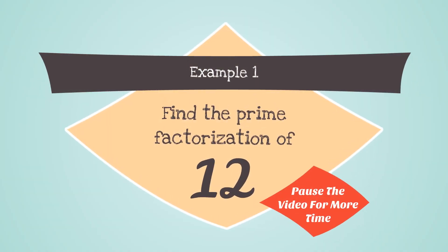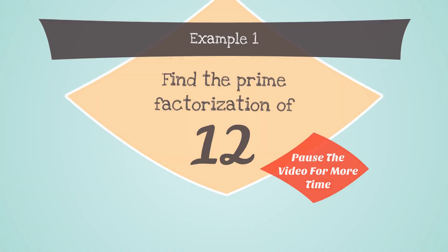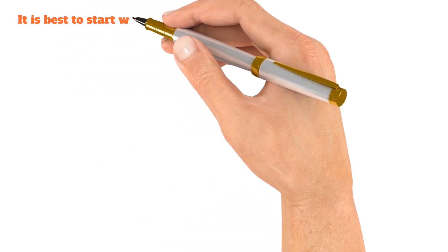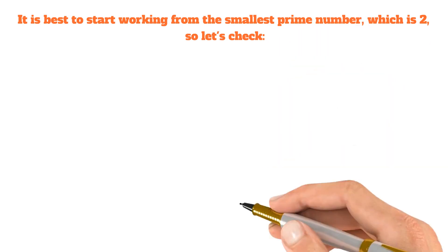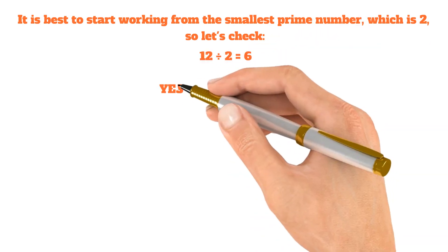Example number 1. Find the prime factorization of the number 12. It is best to start working from the smallest prime number, which is 2. So let's check. 12 divided by 2 equals 6. Yes,